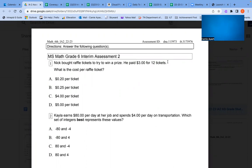MS Math Grade 6 Interim Assessment 2. Question 1: Nick bought raffle tickets to try to win a prize. He paid $3 for 12 tickets. What is the cost per raffle ticket?